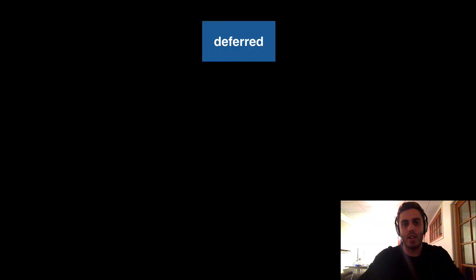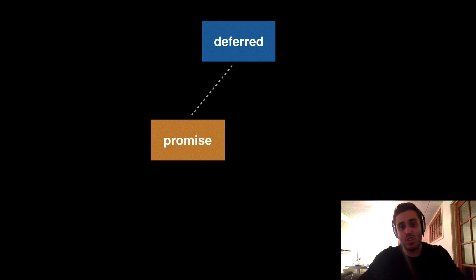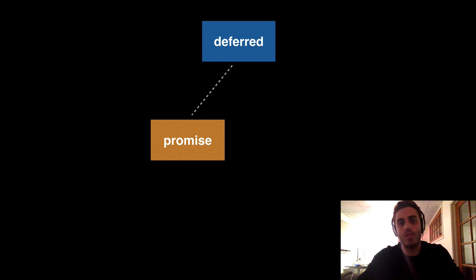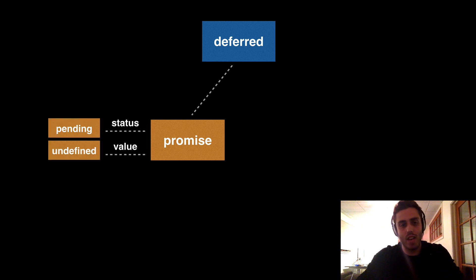We start with a deferred object. The deferred object is just a JavaScript object, but it has a property on it called promise, which is the promise object. These are two separate objects — you can pass the deferred and the promise into separate functions and operate on them independently. But you can always get to the promise from the deferred object because it's just a property on it; you can call deferred.promise and get to the promise at any time. The promise has two properties on it: a status and a value. By default, when you create a promise, the status is pending and the value is undefined.